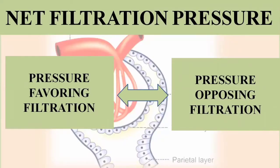The net filtration pressure is the balance between the pressure favoring filtration and the pressure opposing filtration. As learned in previous videos, there are certain pressures involved in the formation of filtrate from the glomerular capillaries — some that favor filtration and some that oppose it. These pressures together form the net filtration pressure.